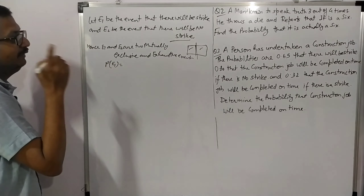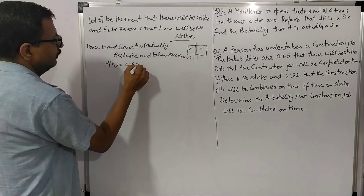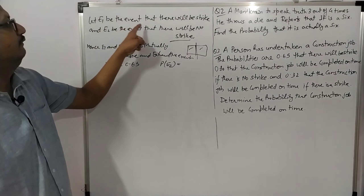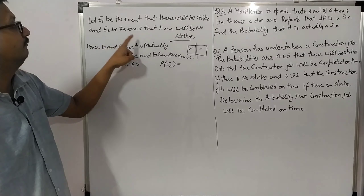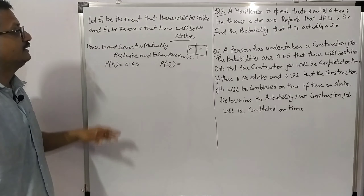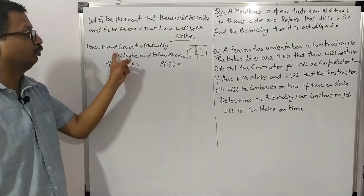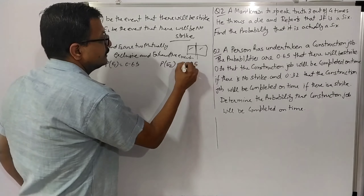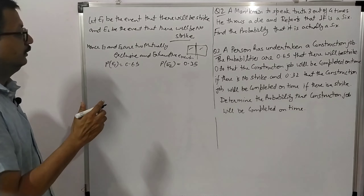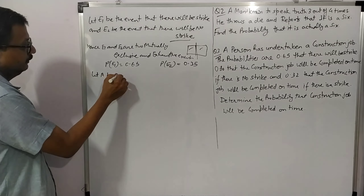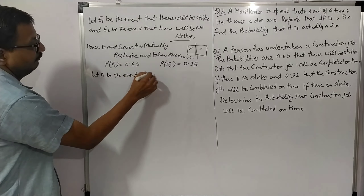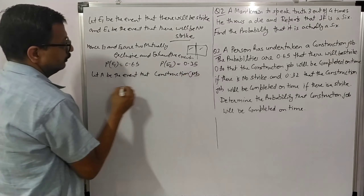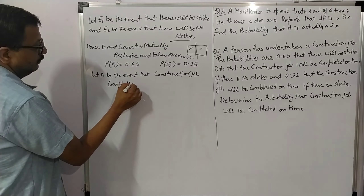P(E1) — probability there will be a strike — is 0.65. Since E1 and E2 are mutually exclusive and exhaustive, P(E2) — probability there will be no strike — is 0.35. Let A be the event that the construction job is completed on time.